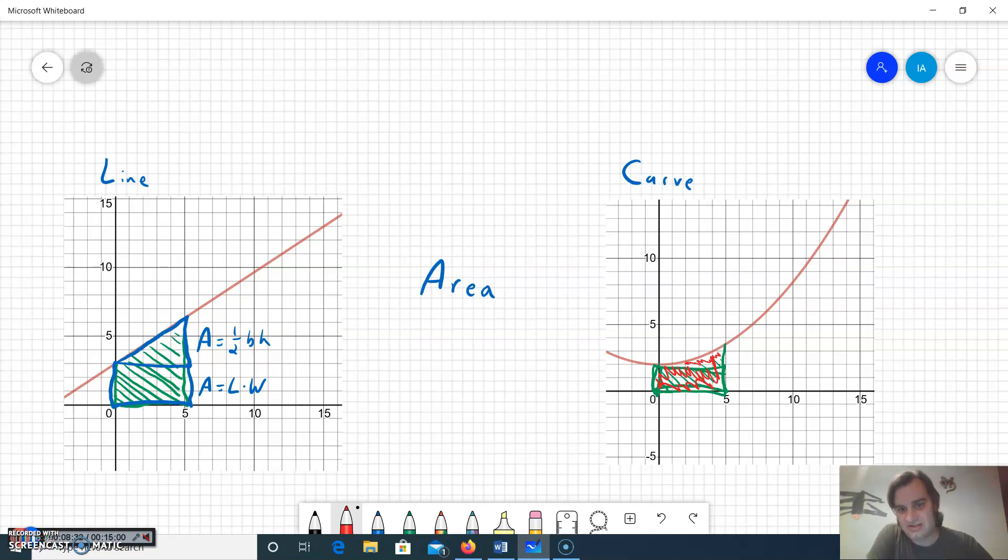To start off with, we can take simple applications like slope, which is a rate of change, or area that we would be able to do with straight lines, and we can transfer that over. Once we learn some of our calculus concepts, we can do the same thing but with curves, and that's where we're going. All right.